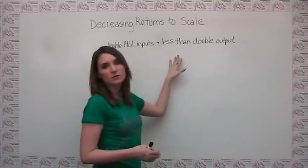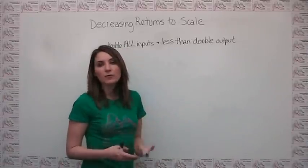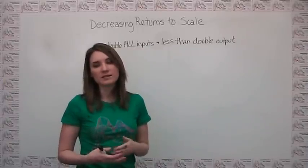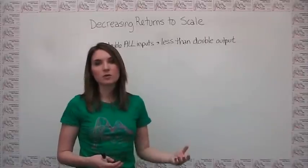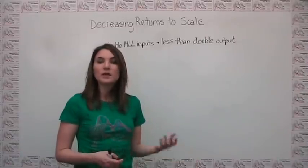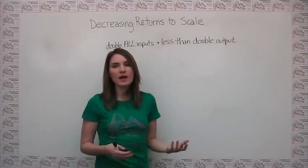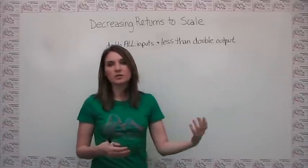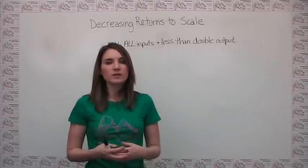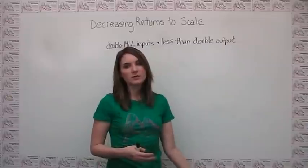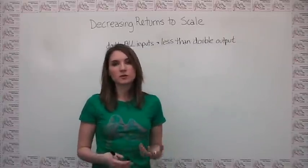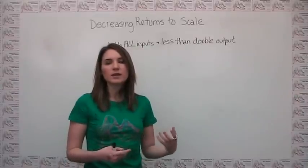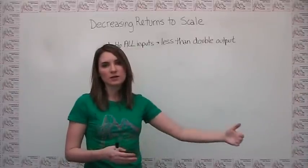Alternatively, we can think about this relationship as if we hypothetically wanted to double our output, we've got to put more than twice as much stuff into the process in order to get there. Decreasing returns to scale might happen because as you're producing more, you need to have more managerial overhead. You may find it more difficult to get the best employees for the job. You may experience other sorts of coordination problems that make the firm sort of too big and unwieldy as you continue to increase your production.